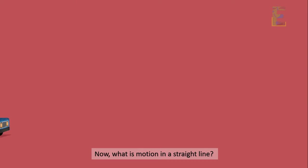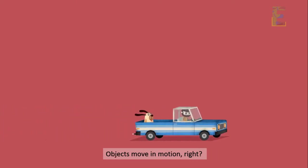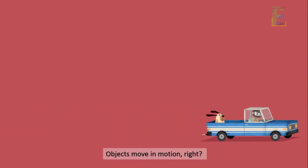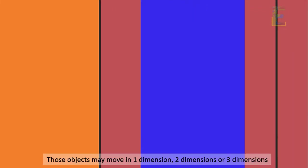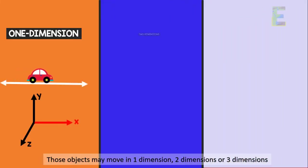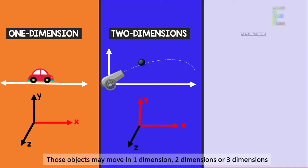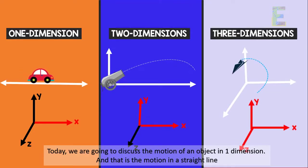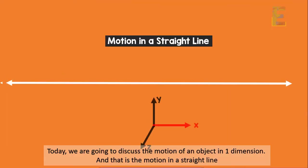Now, what is motion in a straight line? Objects move in motion, right? Those objects may move in one dimension, two dimensions, or three dimensions. Today, we are going to discuss the motion of an object in one dimension, and that is the motion in a straight line.